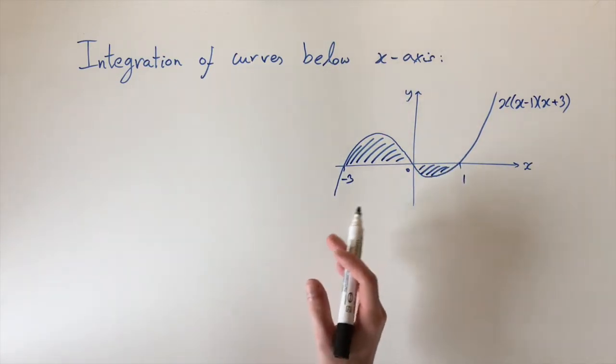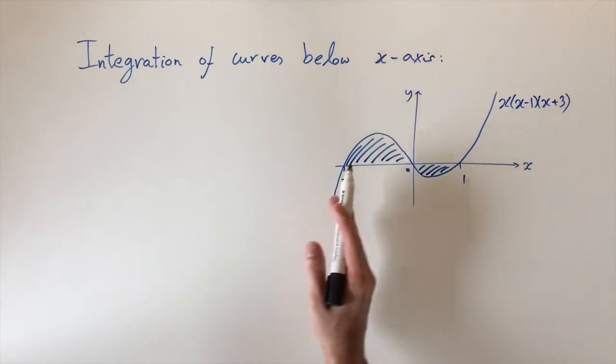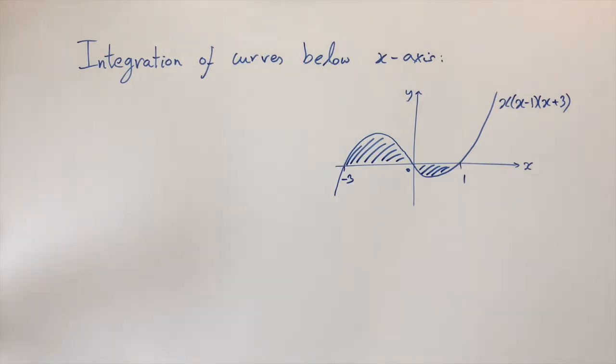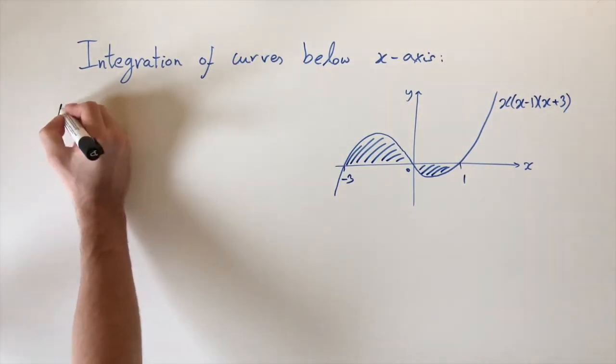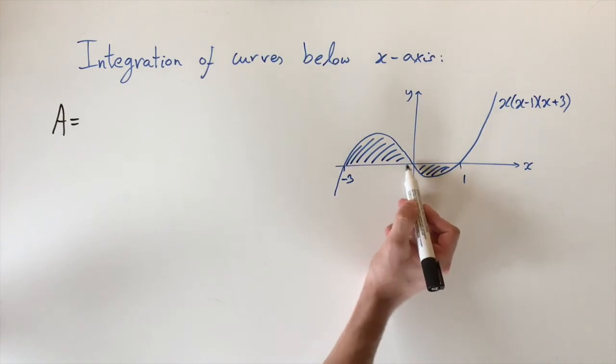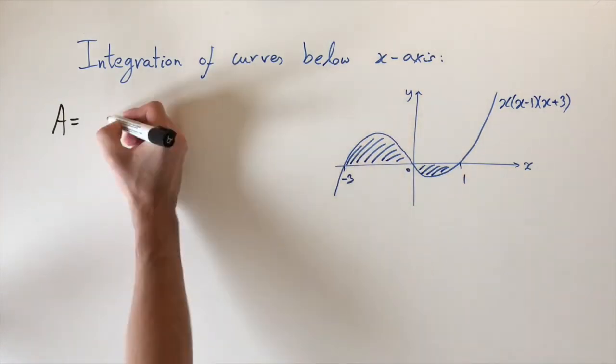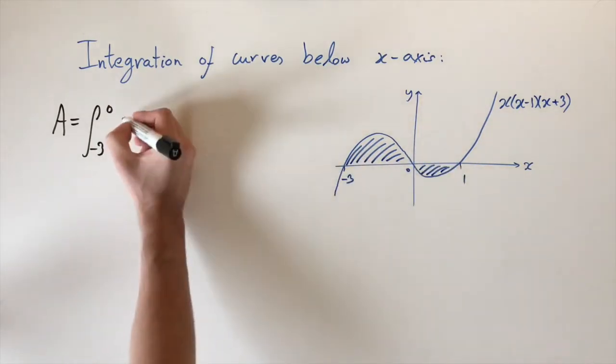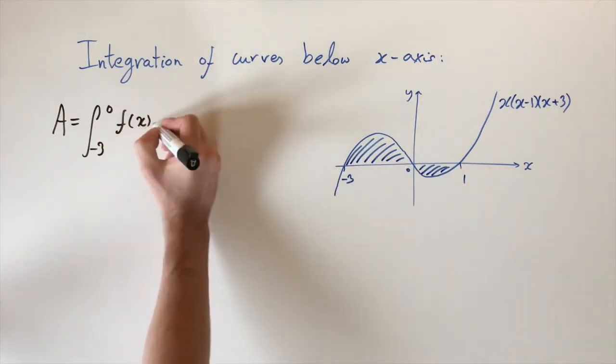So our strategy here to find the true area is to just integrate each section on its own, and then we can kind of think about what the area is going to be. So if I denote A for the area, then this is going to give us a positive number, so the area of this section is just the integral between minus 3 and 0 of this function, which I'll just call f of x for now, dx.